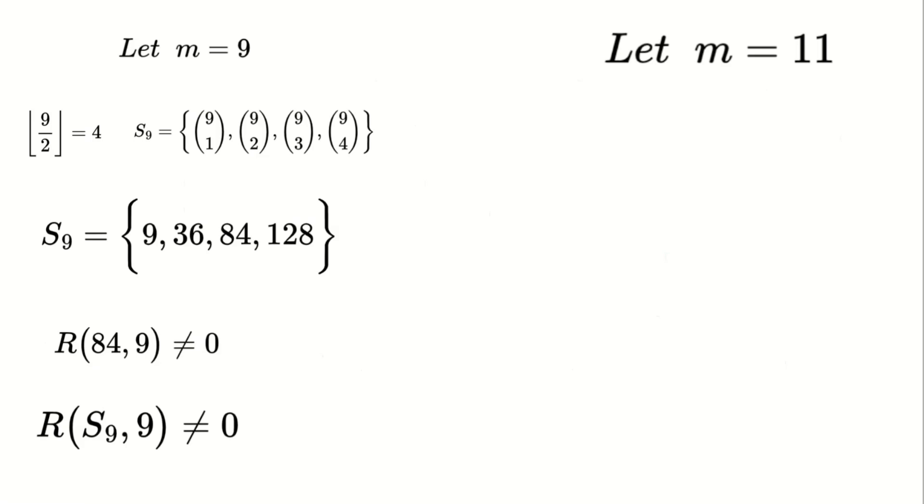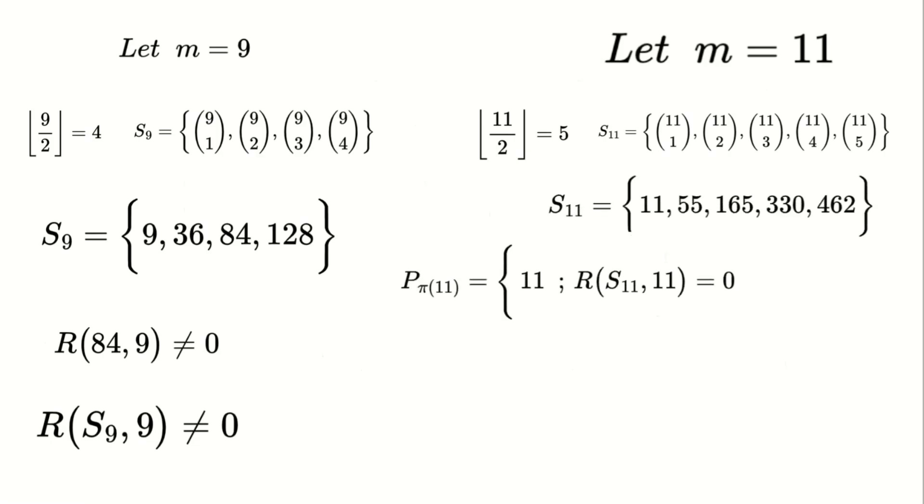Finally, let's test with m equals 11. The floor of 11 over two equals five. So S_11 will have five elements from 11 choose one to five. Applying the formula, we find that R(S_11, 11) equals zero. So P_π(11) equals 11. This is the fifth prime number.